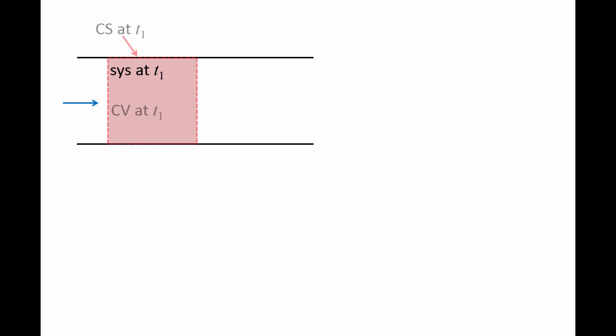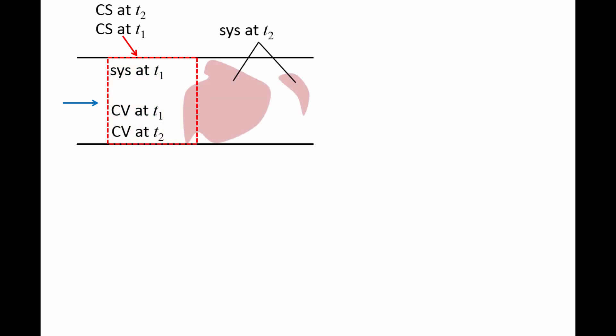At the same moment in time, we select a control volume that occupies the same region of space as the system. The control volume is fixed in place and surrounded by a control surface, marked by red dashed lines. At a future time t2, the system will begin to flow out of the control volume and no longer occupies the exact same region of space as the control volume.